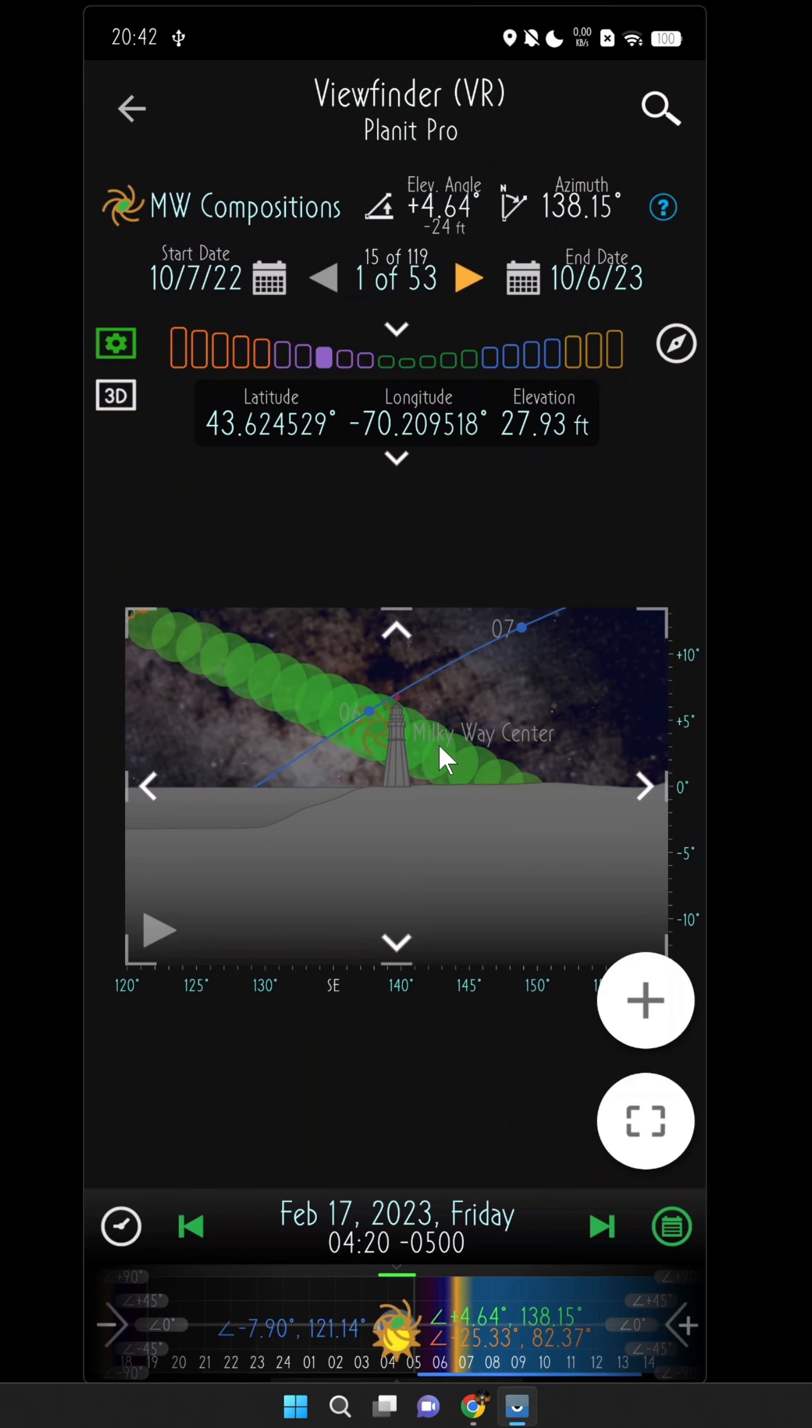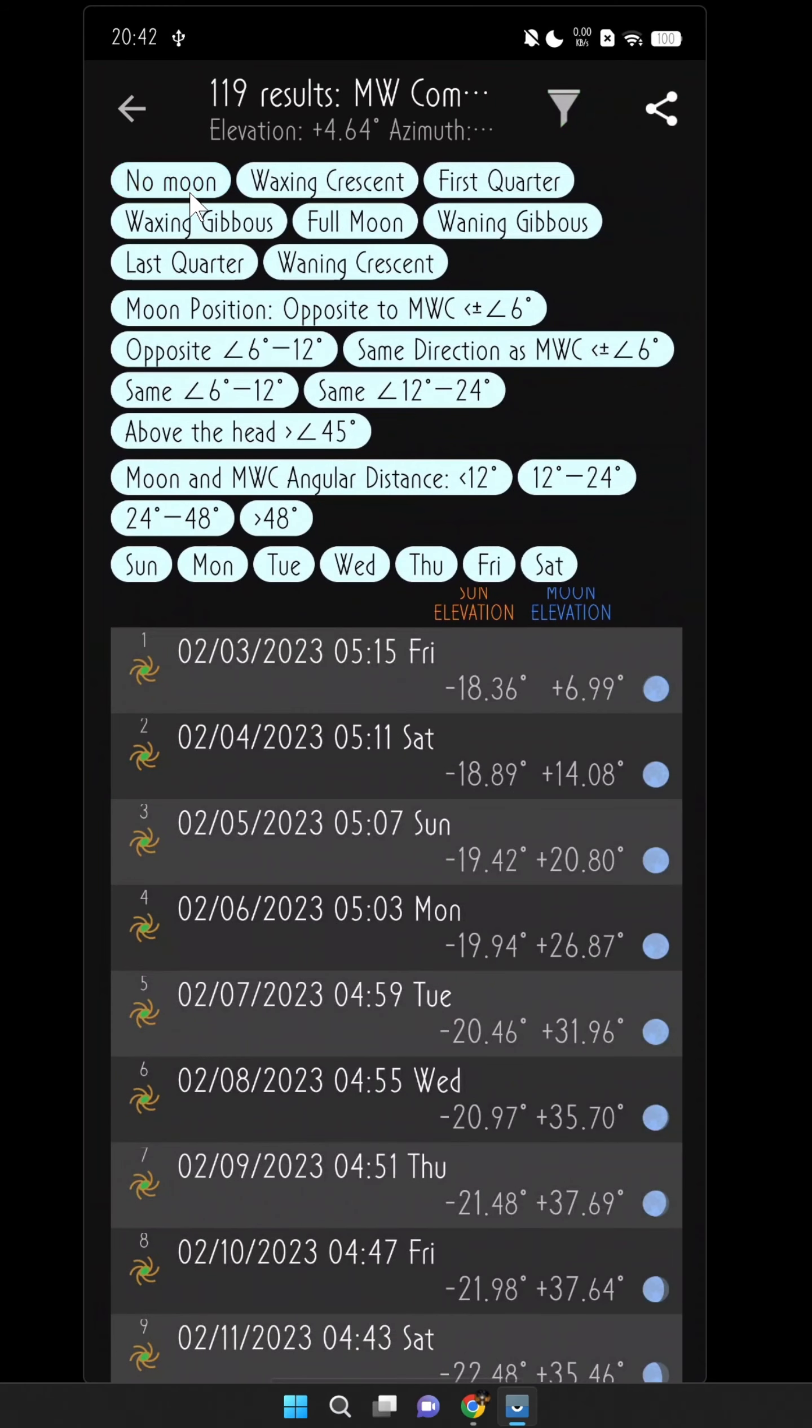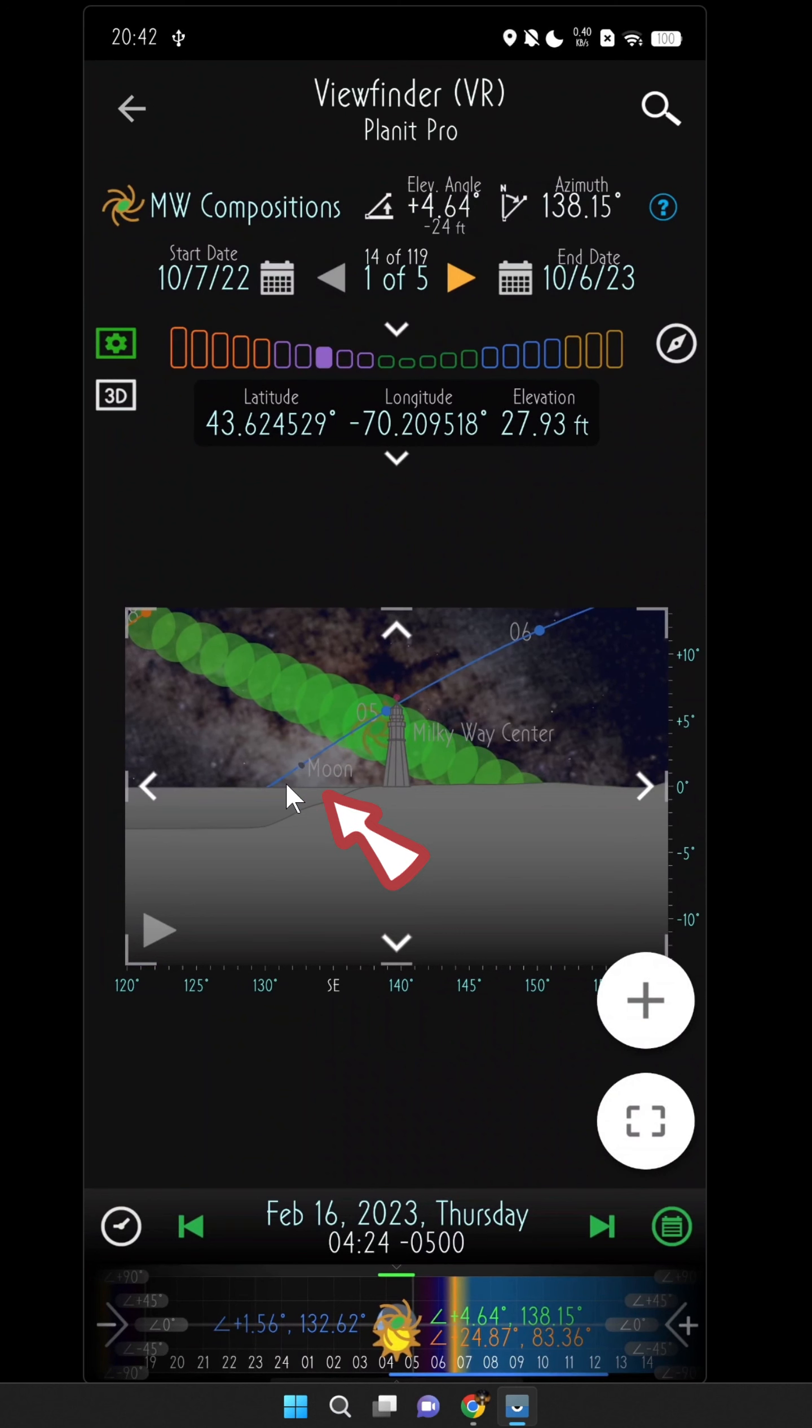It's also easy to see if we can photograph a moonrise with this composition. Tap to see the list, uncheck the no moon, check the moon position, same direction as the Milky Way, plus or minus 6 degrees, and the first date is February 16th of next year. Tap it. You can see a moon right here.